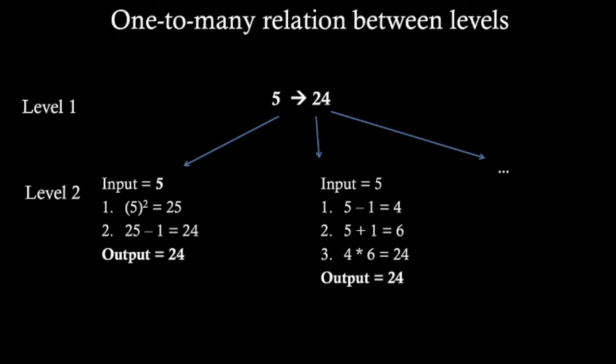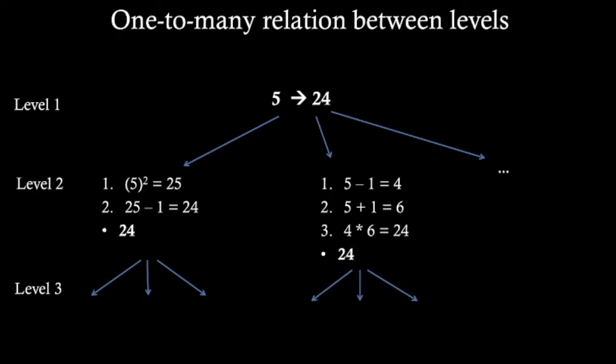At the functional level, they are equivalent. At the level of implementation, we also have a one-to-many relationship. This algorithm could be implemented physically, electronically, mechanically by a machine, or biologically by a brain. Between any level and other levels below it, it's a one-to-many relation.